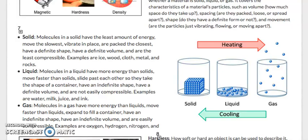Molecules in a solid have the least amount of energy, move the slowest, vibrate in place, are packed the closest, have a definite shape, have a definite volume, and are the least compressible. Examples are ice, wood, cloth, metal, and rocks. You can see here, this is the solid packed tightly.